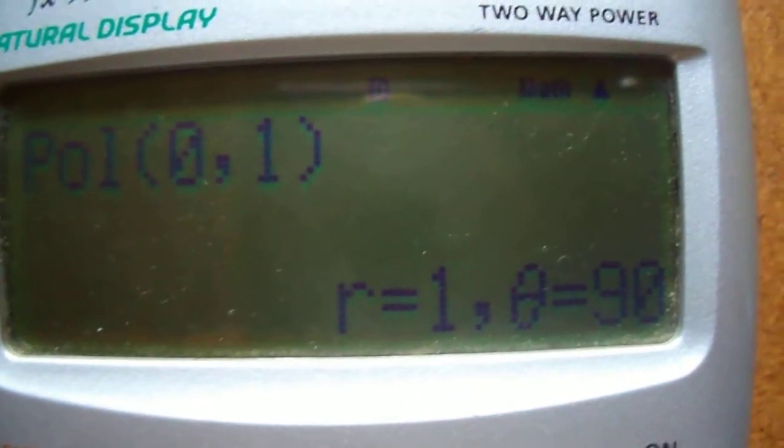You will get R equal to 1 and theta equal to 90. Now press AC.